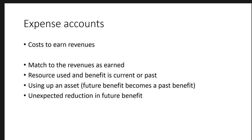Sometimes we're going to have an expense because we first had an asset — we bought an asset and then used it up. A used-up asset becomes an expense because the future benefit becomes the past. Then there are the worst kind: unexpected reductions in future benefit. Something happened to one of our assets — it became obsolete, broken, no longer viable, or was hit by lightning. Those are expenses that don't fit the other categories but are still clearly a used-up benefit.